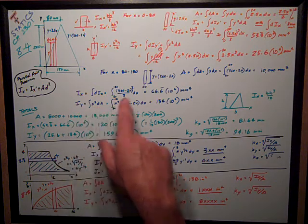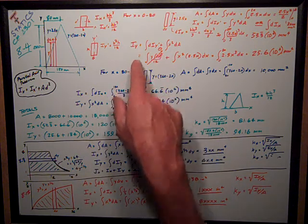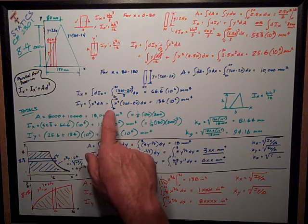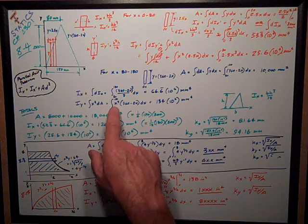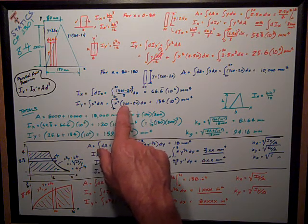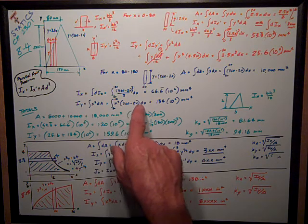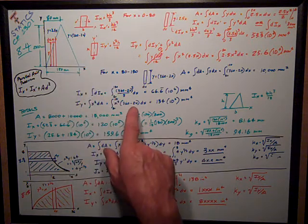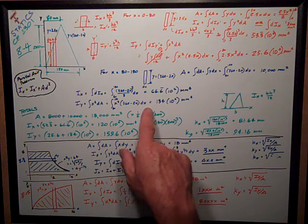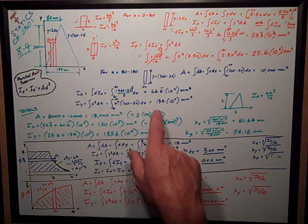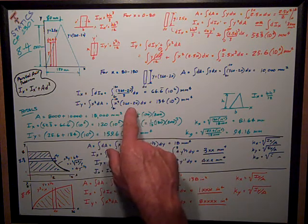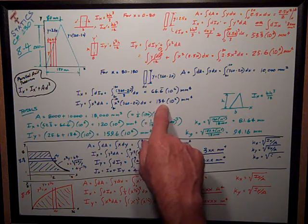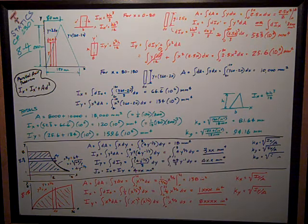Iy is similarly just the integral of x² dA, which is the integral from 80 to 180 of x² times (360 − 2x) dx. Substituting the y formula, evaluating that — it's not bad, I could do it by hand or Wolfram Alpha — gives 134 × 10⁶ mm⁴.